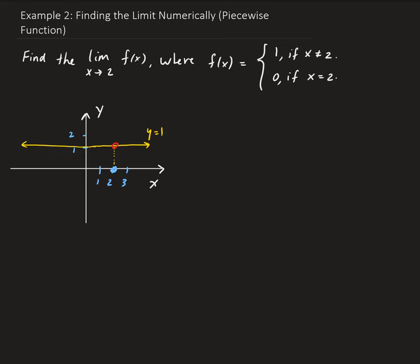So the limit of this function as x approaches 2 is actually going to be 1. The way you think about this is to think of this as a road and you're driving along this path. Think of the circle as a stop sign. As you're driving along, you're getting closer and closer to the stop sign, and that stop sign has a y value of 1 — that's what you're approaching.